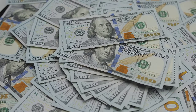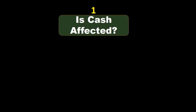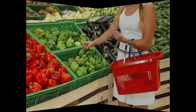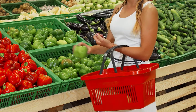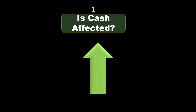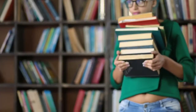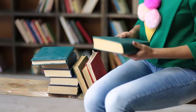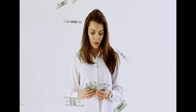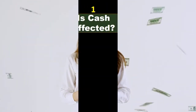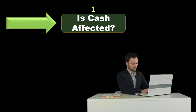Cash is involved in just about every cycle at some point — the receivable cycle, the sales cycle, the purchasing cycle, and the payroll cycle. Therefore, if we can understand what's happening to cash, we will be able to deal with at least half of many of the journal entries we encounter. The other reason to start with cash is that it's very easy for us to quickly understand what is going on — either we paid cash or we received cash — so it's very easy to know if cash is going up or down.